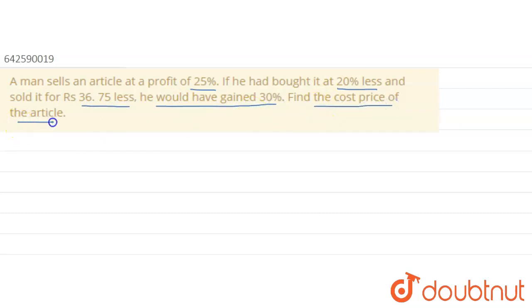Now we assume: let cost price, represented by CP, of the article is equal to 100x. This is the assumed value. Profit is equal to 25%.